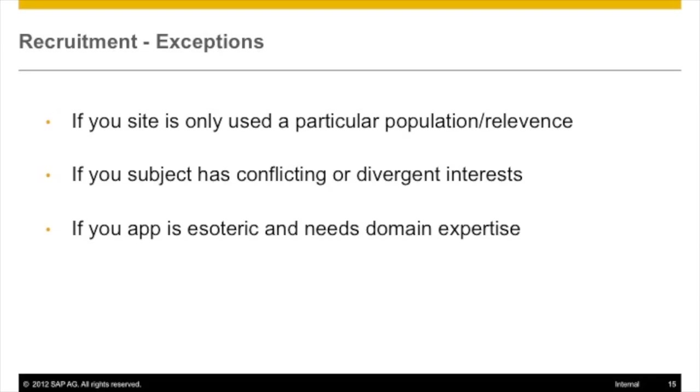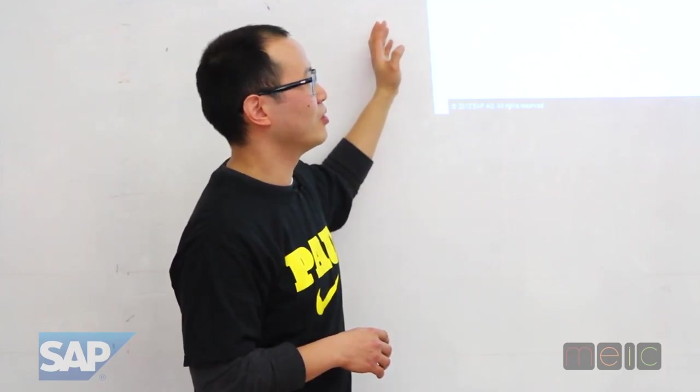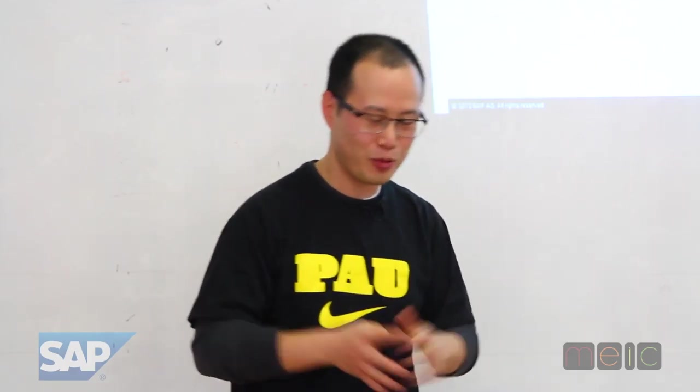There are some exceptions to this. If your site has a particular relevance or requires an esoteric type of user, you won't really be able to recruit loosely. For example, if you have a person with conflicting or divergent interests — and this came up as a kind of good housekeeping note — we had someone whose site dealt with, put politely, people having extramarital-type relationships. The problem then is figuring out who in your audience should participate and test that, which creates a conflict of interest.